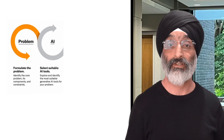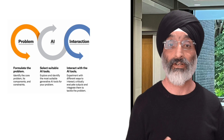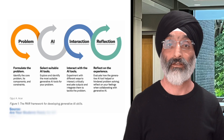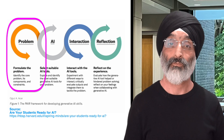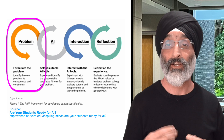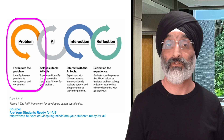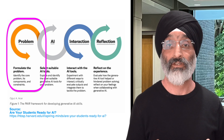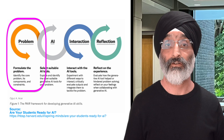So what do we need to do to develop these skills? Well, the PEAR framework consists of four steps: Problem, AI tool selection, Interaction and Reflection. In the first step, you help your student to define a problem or challenge they want to address with the help of AI tools.